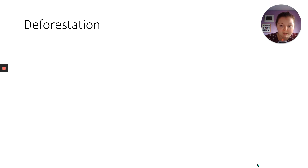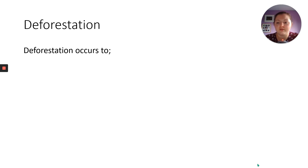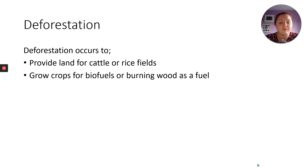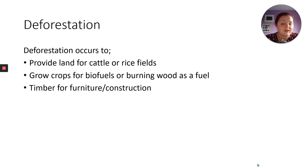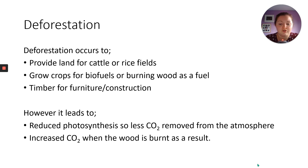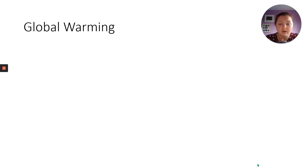Deforestation also comes under land use. Deforestation happens for reasons: to provide land for cattle or rice fields, to grow crops for biofuels, or for wood as a fuel source or timber for construction and manufacturing. However, this leads to reduced photosynthesis — less CO2 taken out of the atmosphere — and increased CO2 when wood is burnt. Less photosynthesis means less O2 produced and more CO2. So there are two reasons why more CO2 ends up in the atmosphere than it should, which can lead to global warming.